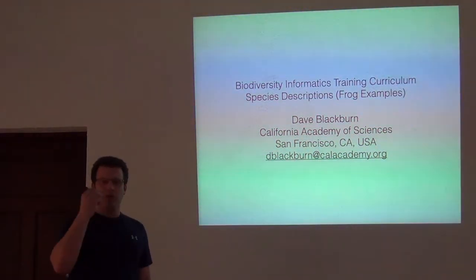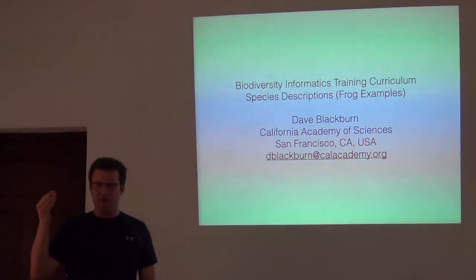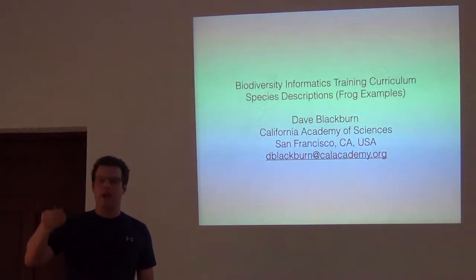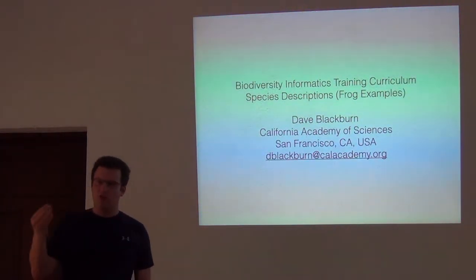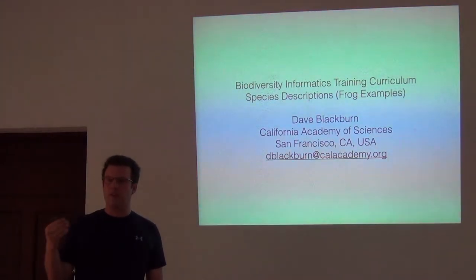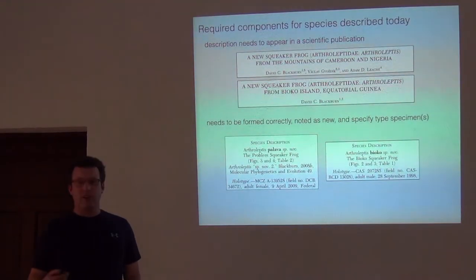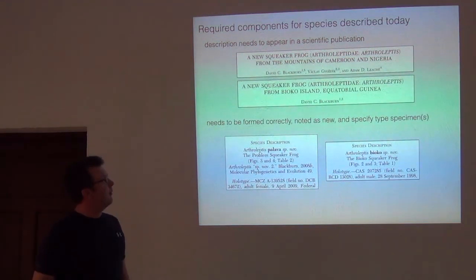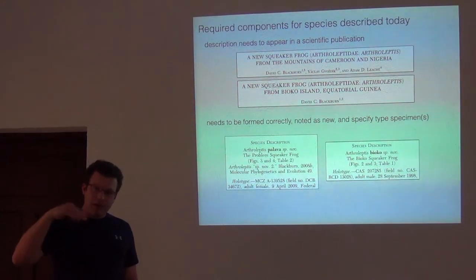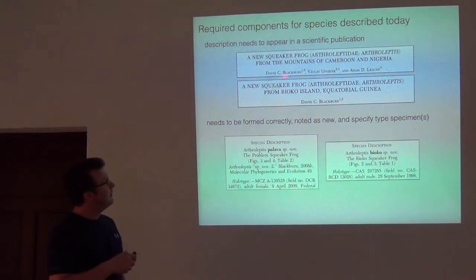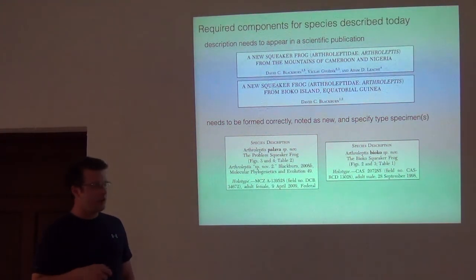Hopefully as we go through the next three presentations, you can keep that in mind and think about how we actually go through field work to collect that information. I'm going to give a couple of general comments, but then speak specifically with examples from how we describe frog species. The scientific description needs to appear in a peer-reviewed scientific publication published and disseminated in the world. This is just an example of two species I've described from this region — one in Cameroon and Nigeria, one on Bioko, the island off the coast.